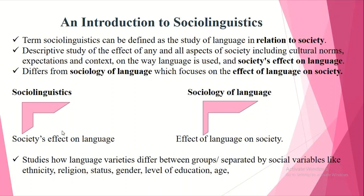Sociolinguistics differs from the sociology of language, which focuses on the effect of language on society. Sociolinguistics studies society's effect on language, whereas sociology of language studies the effect of language on societies. We can say that sociolinguistics studies how language varieties differ between groups separated by social variables like ethnicity, religion, status, gender, level of education, and age.